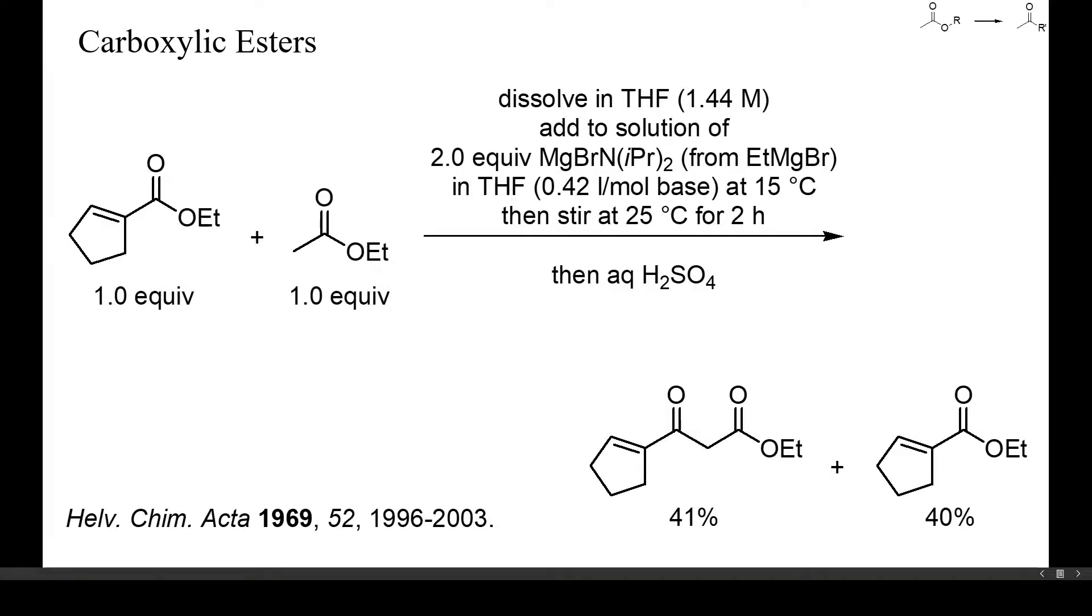The cross-condensation of two different esters sometimes gives acceptable results, in particular if one of the two esters has no alpha-hydrogen atoms. In this example, ethyl acetate was condensed with an alpha-beta unsaturated ester and a high yield of keto ester resulted, though the conversion was only low. A magnesium amide was used as base.